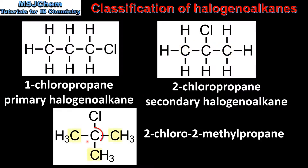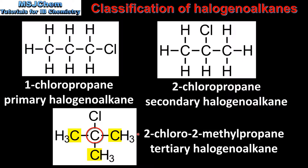In our last example we can see that there are three carbon atoms that are directly bonded to the carbon atom that is bonded to the halogen atom. This makes 2-chloro-2-methylpropane a tertiary haloalkane.